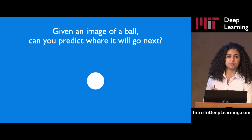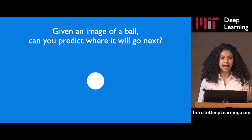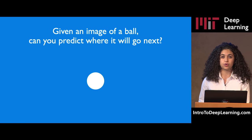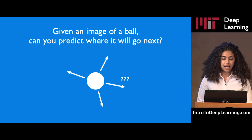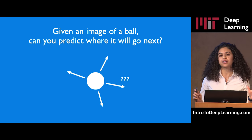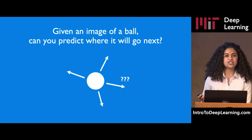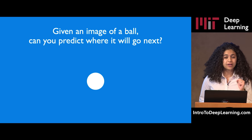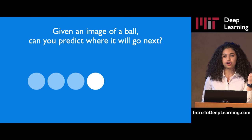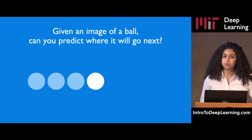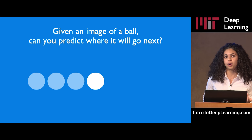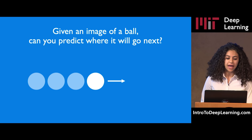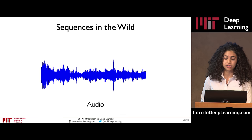Let's first motivate the need for sequence modeling with a simple example. Suppose we have a picture of a ball, and our task is to predict where this ball is going to travel to next. If I don't give you any prior information on the ball's history, any guess on its next position is just going to be a random guess. But if in addition to the current location of the ball I also gave you some information about its previous locations, now our problem becomes much easier.